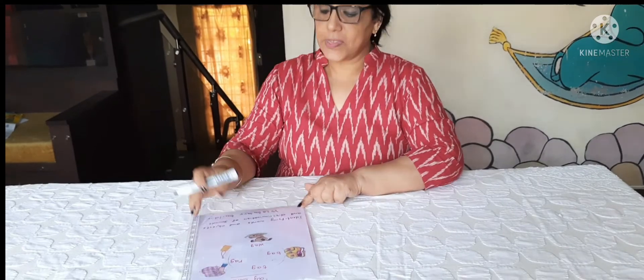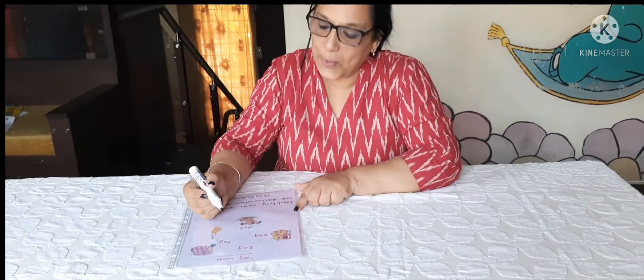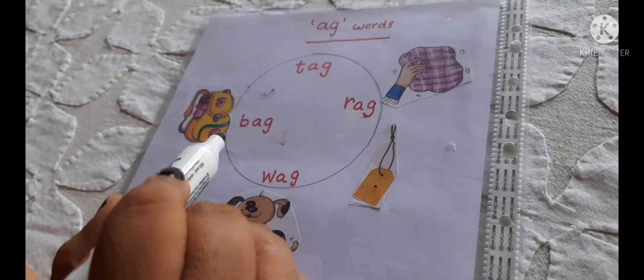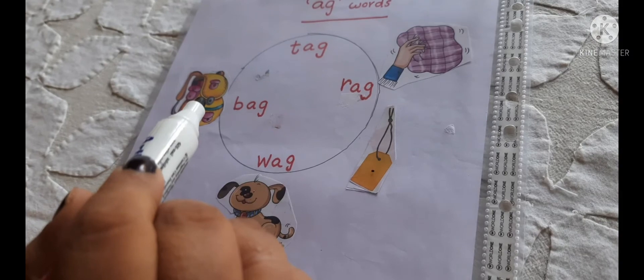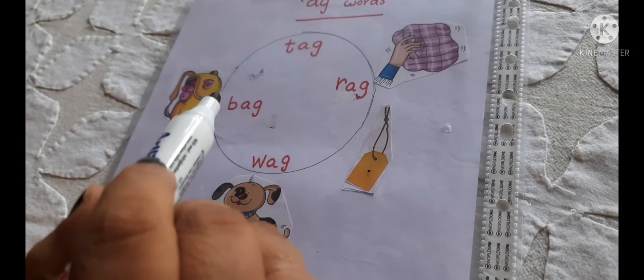Identify words and objects and discrimination of sounds. Let's read. T, ag — tag. Where is tag? Yes. Tag. R, A, G — rag. Where is tag? Yes. Tag. Tag.